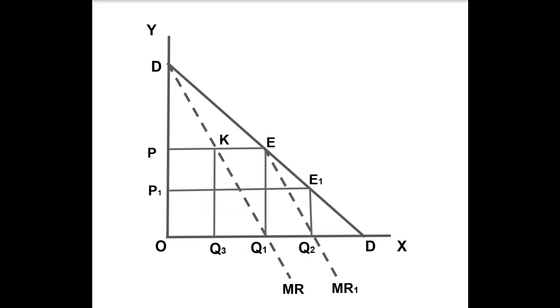Thus, OP is a perfectly stable price because either seller can bring disaster upon himself as well as upon his rival by behaving differently. So, according to Chamberlin, when both the sellers recognize mutual dependence between themselves, they are able to earn monopoly profit.